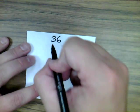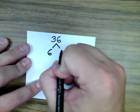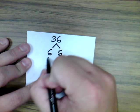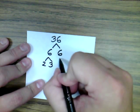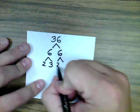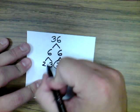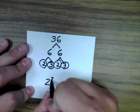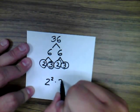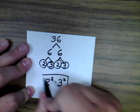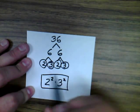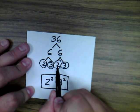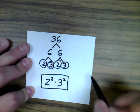For 36: break it down as 6 times 6, then each 6 as 2 times 3. We've got the answer in exponential form: 2 squared times 3 squared. To double check: 2 times 3 is 6, times 2 is 12, times 3 is 36 — confirmed correct.